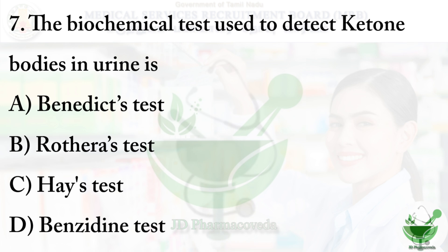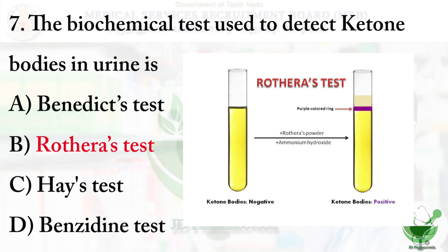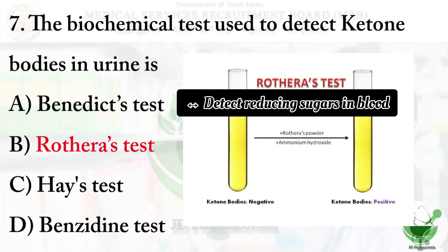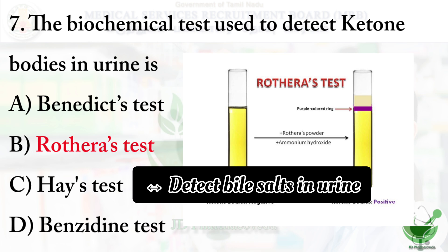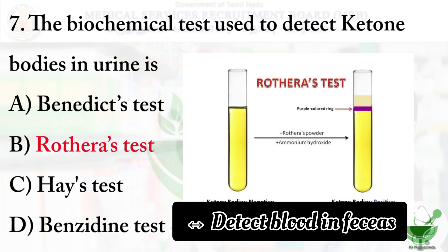Question number seven: the biochemical test used to detect ketone bodies in urine — option A: Benedict's test, option B: Rothera's test, option C: Hay's test, option D: benzidine test. The correct option is option B, Rothera's test. Benedict's test detects reducing sugars. Hay's sulfur powder test detects bile salts in urine. The benzidine test is used for detection of blood in feces.